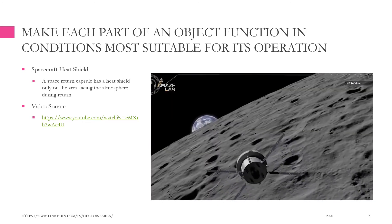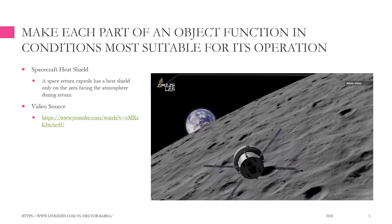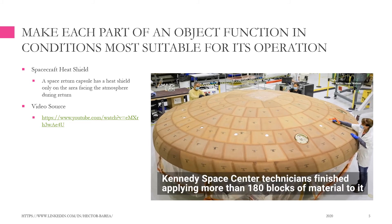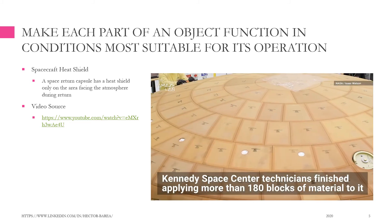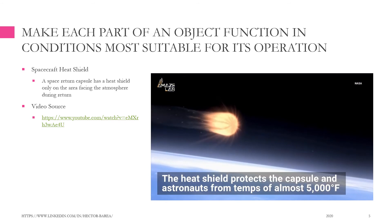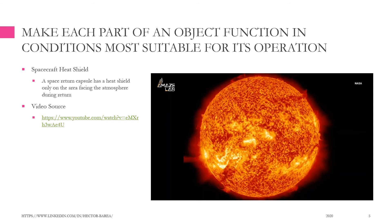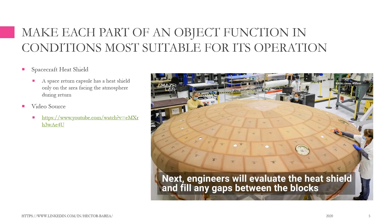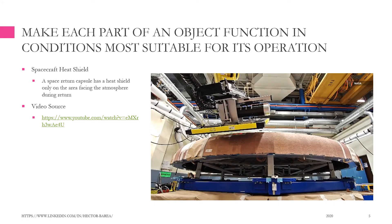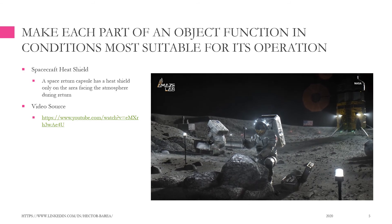The Orion spacecraft will one day take astronauts around the moon during the Artemis II mission, which will be Orion's first crewed mission on the Space Launch System rocket. The craft's heat shield has just hit a major milestone — NASA's Kennedy Space Center technicians finished applying more than 180 blocks of material to this critical element. The heat shield protects the capsule and astronauts from temperatures of almost 5,000 degrees Fahrenheit during re-entry into Earth's atmosphere — NASA says that's about half as hot as the sun. Engineers will evaluate the shield, fill gaps between blocks, then it'll go through a thermal test before being sealed, painted, and installed to the crew module.